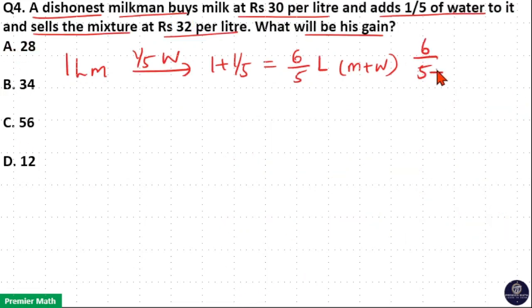Here, 6 by 5 means this 5 part is the quantity in 1 litre mixture, and 6 part is the quantity which is greater than 1 litre mixture. The 6 part still costs Rs. 30 because water has no cost.